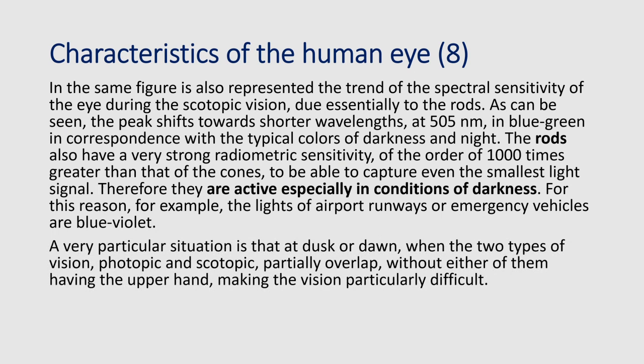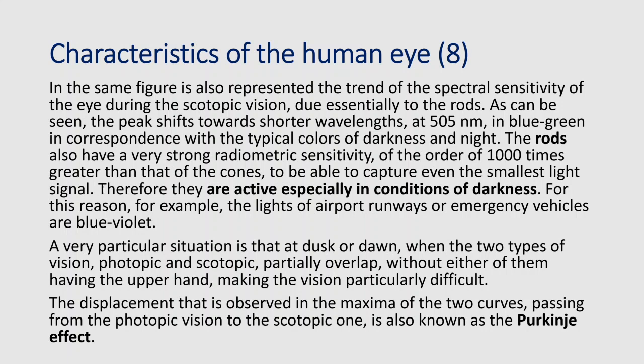A very particular situation occurs at dusk or dawn, when the two types of vision — photopic and scotopic — partially overlap without either having the upper hand, making vision particularly difficult. When the sun is very low on the horizon, we have a partial overlapping of the two visions, which you know by experience makes vision very difficult. The displacement observed in the maxima of the two curves when passing from photopic to scotopic vision is known as the Purkinje effect — named after the scientist who studied human eye sensitivity — referring to the shift of peak sensitivity from larger to smaller wavelengths.